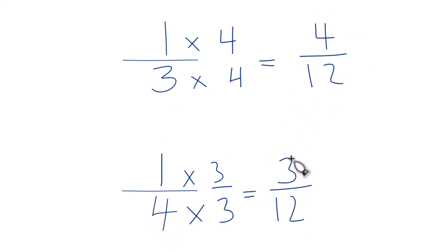So 4 is greater than 3, 4 twelfths, that's greater than 3 twelfths. And since 3 twelfths and 1 fourth are the same thing, 1 third, that's greater than 1 fourth.